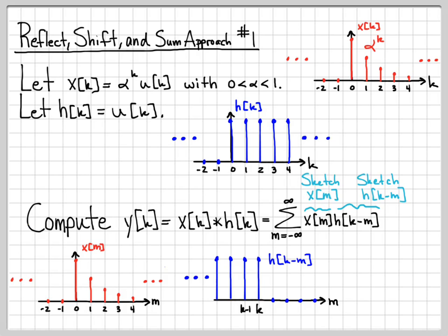And when I sketch h[k-m], it's very important to plot it with k as a variable. So don't plot it for a specific value of k. Actually leave k as a variable there on the time axis. You'll notice when I plotted h[k-m], I did not label where the origin is, right? I didn't plot where 0 is, because right now, k is just a variable. And k could be to the left of the time origin, or it could be to the right of the time origin.